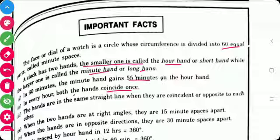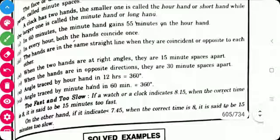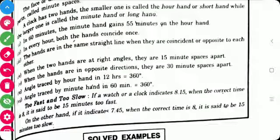Third point is, the hands are in the same straight line when they are coincident or opposite to each other. Fourth point is, when the two hands are at right angles, they are 15 minutes spaces apart.